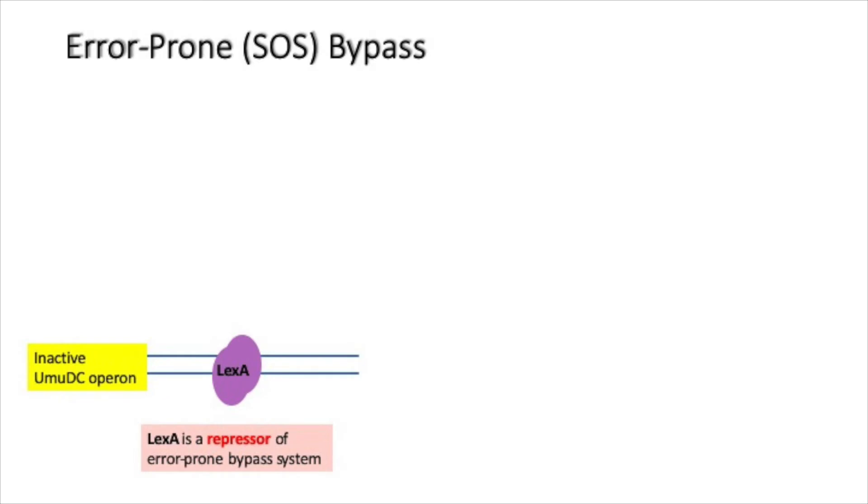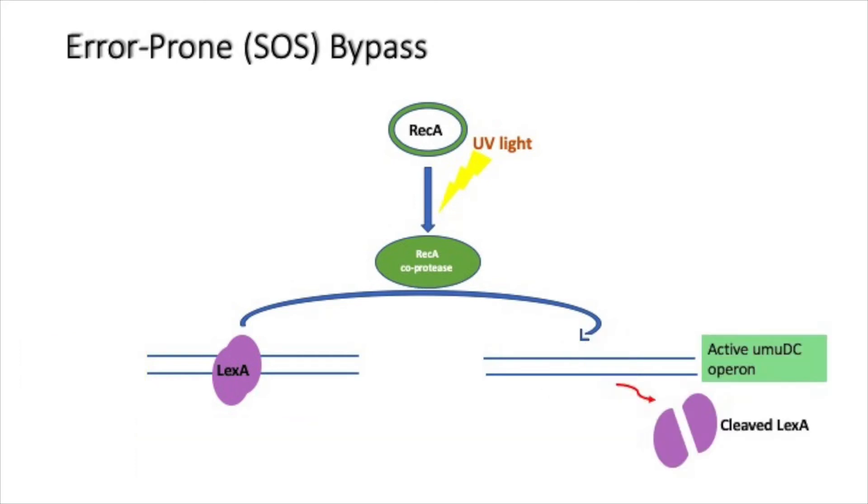LexA is a transcriptional repressor of error-prone bypass system. But in the presence of UV, it is cleaved and inactivated by the RecA co-protease. With the release of cleaved LexA repressor, the UmuD-C operon becomes active, and UmuD and UmuC genes are transcribed.